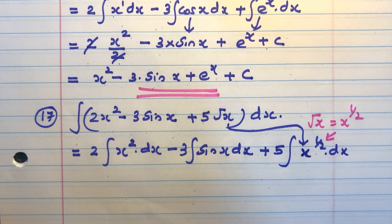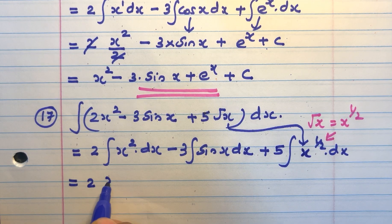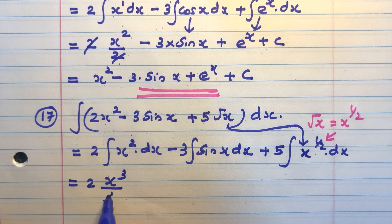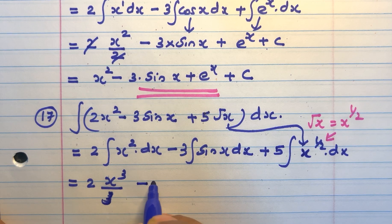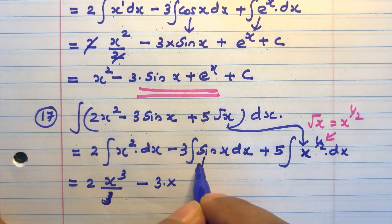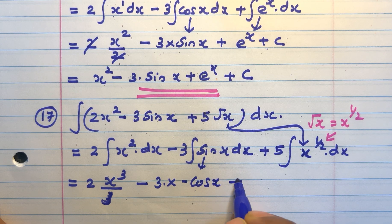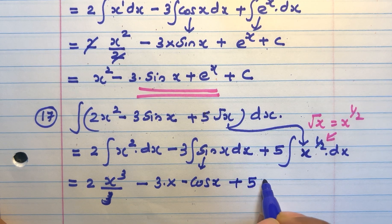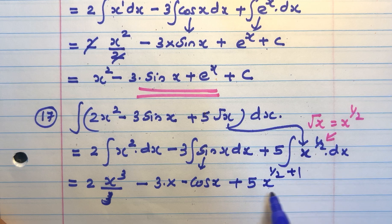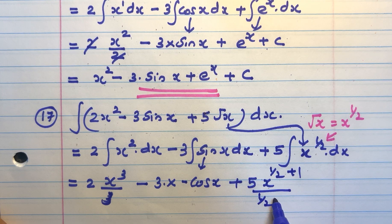Now take the integration. That is equal to 2 into x raised to 3 by 3, that is x raised to 2 plus 1 by 2 plus 1, minus 3 into the integration of sinx which is minus cosx, plus 5 into x raised to 1 by 2 plus 1 divided by 1 by 2 plus 1, plus c.